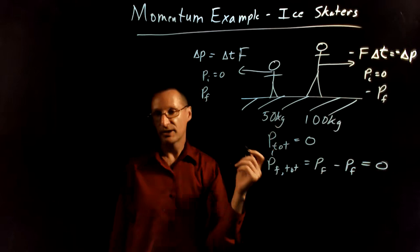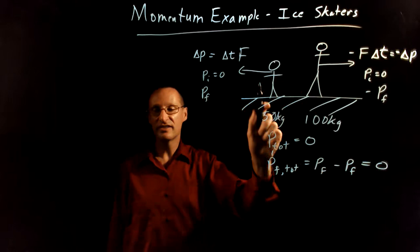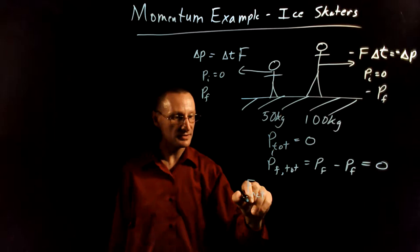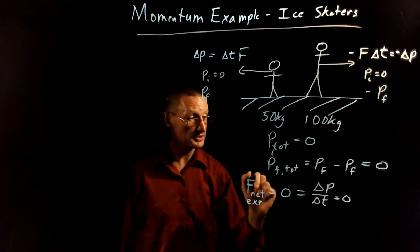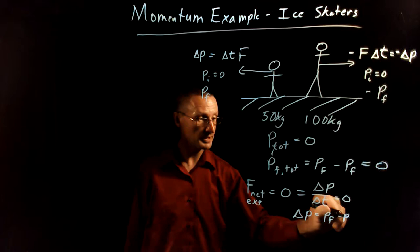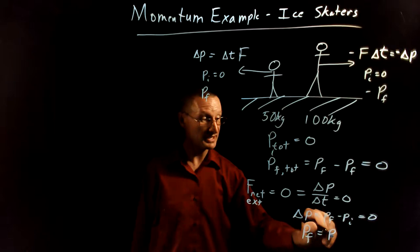Another way of looking at this is that they started with zero momentum and because the net external force on them was zero, that means that the total change in momentum would be zero. And if the total change in momentum is zero, remember that delta p is p final minus p initial. If that's zero, this means that the final must equal the initial.